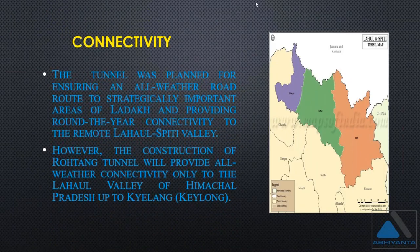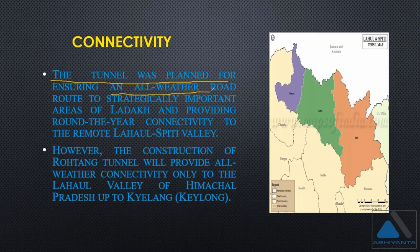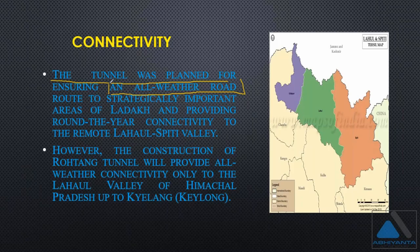The tunnel was planned to ensure an all-weather road. There are two types of roads: fair weather roads designed for limited seasons, and all-weather roads that run throughout the year. In this region, which is highly covered with snow, it is very difficult to maintain a road during winter. Snow covers all roads in winter, making it impossible to manage as an all-weather road. Tunneling is the only solution to construct an all-weather road in this region.